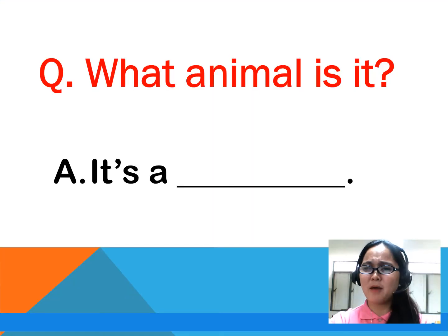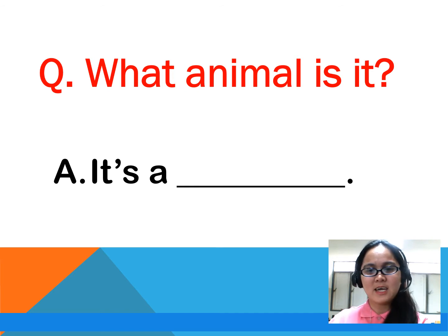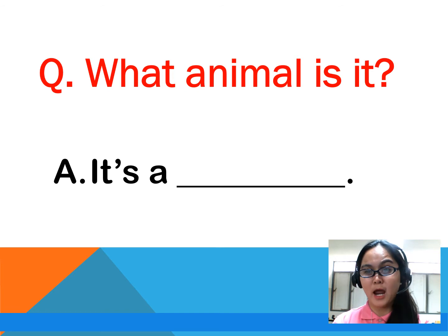So we have our sentence structure. What animal is it? It's a blank. Again, what animal is it? It's a blank.